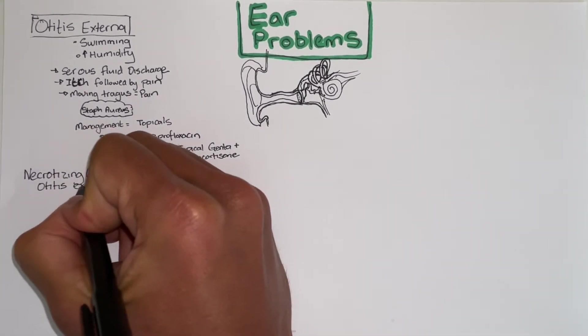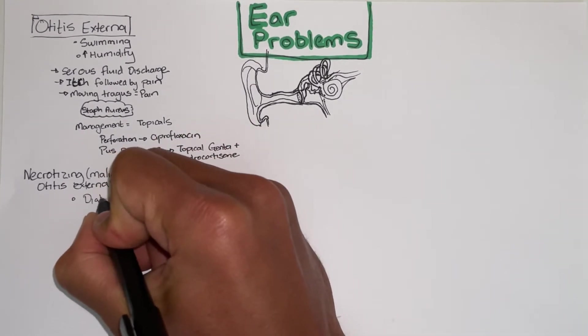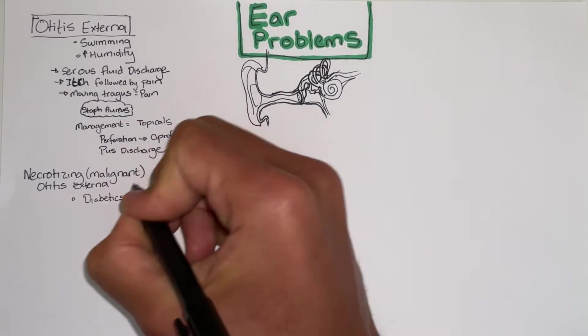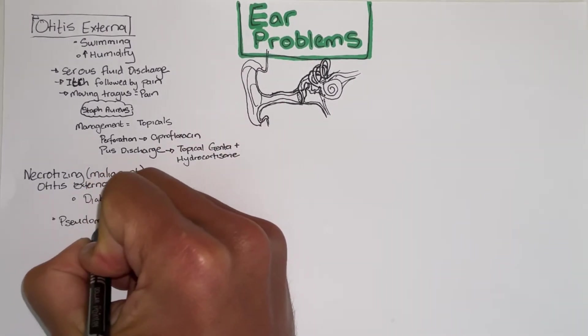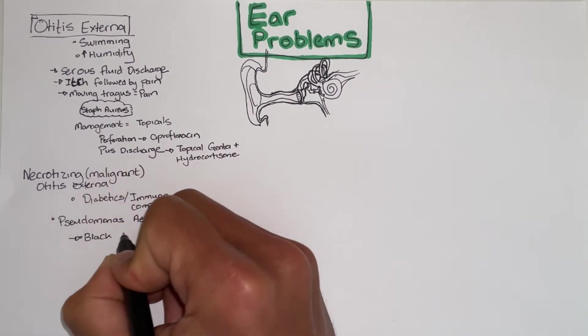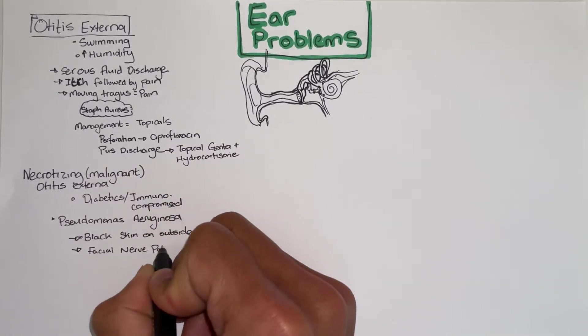Necrotizing otitis externa or malignant otitis externa as the name suggests is more serious. It occurs in diabetics and those who are immunocompromised. The culprit is Pseudomonas aeruginosa. You can identify this from black skin on the ear and the patient can also have a facial nerve palsy.